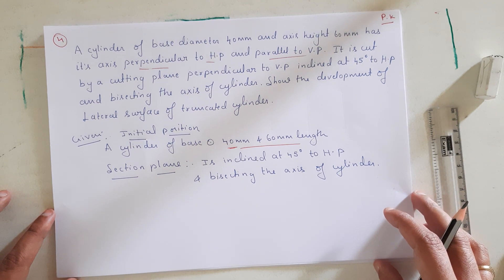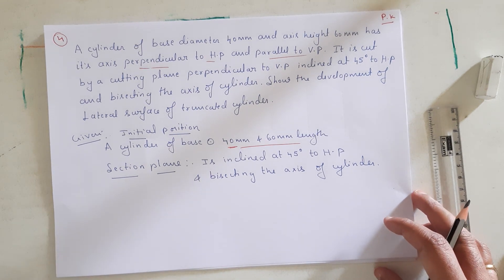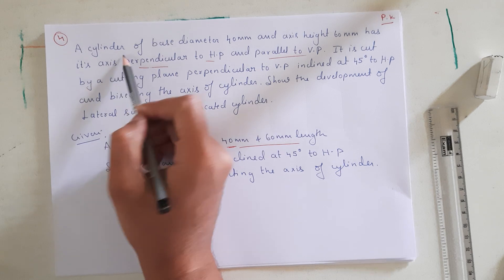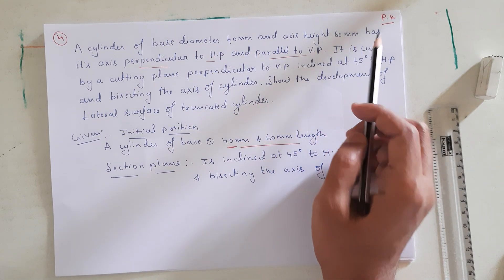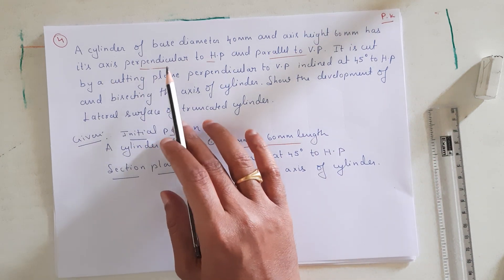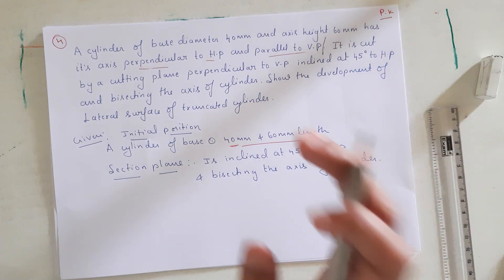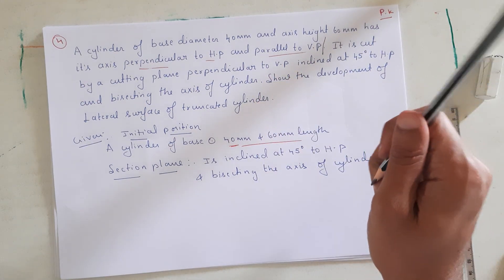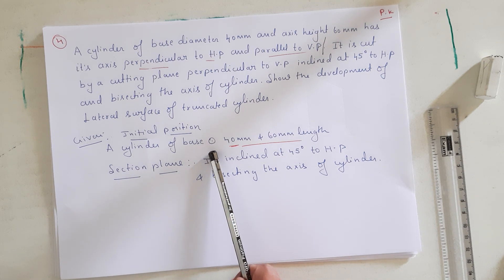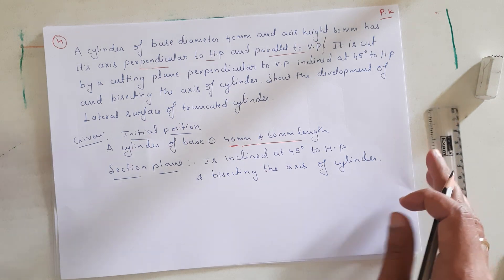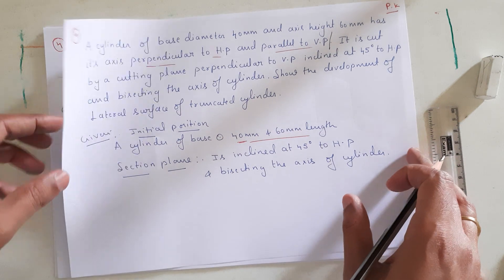Hello friends, namaste. Today we are back with one more problem. The problem given is a cylinder of base diameter 40 mm and axis 60 mm, with its axis perpendicular to HP and parallel to VP. This is the data required. A cylinder of base 40 mm diameter and 60 mm length. We are going to write the corresponding top view and front view.